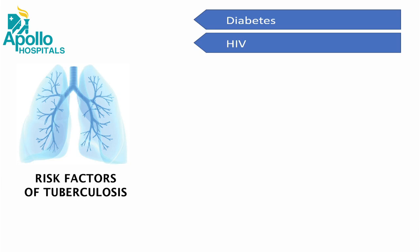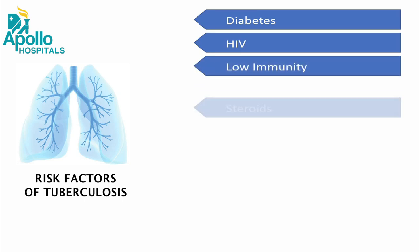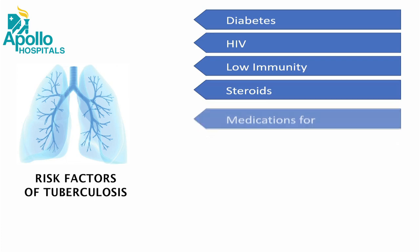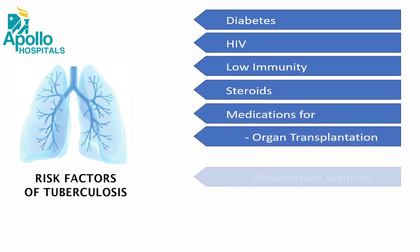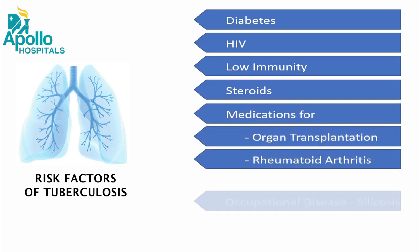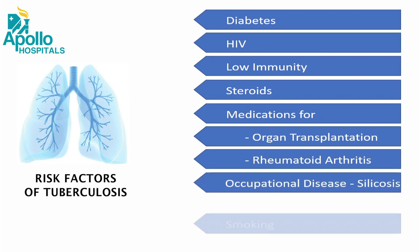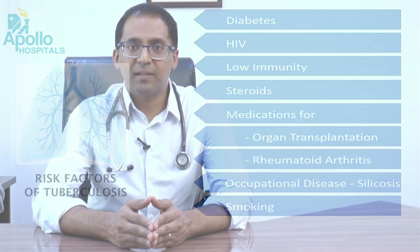It is also important to recognize that people who have low immunity, people on steroids, people on special medicines for organ transplants, or who have received medicines to treat rheumatoid arthritis are also at risk. Occupational diseases like silicosis, as well as people who smoke, are especially at risk for tuberculosis and should be evaluated urgently if they have any of the symptoms mentioned.